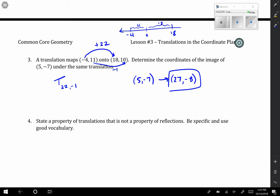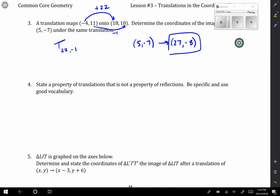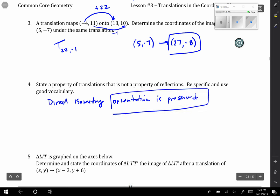Number four says state a property of translations that is not a property of reflections. Be specific and use good vocabulary. So one of the things that we learned is translations were direct isometries, which means that orientation is preserved. That's something that's true about translations that's not true about reflections.